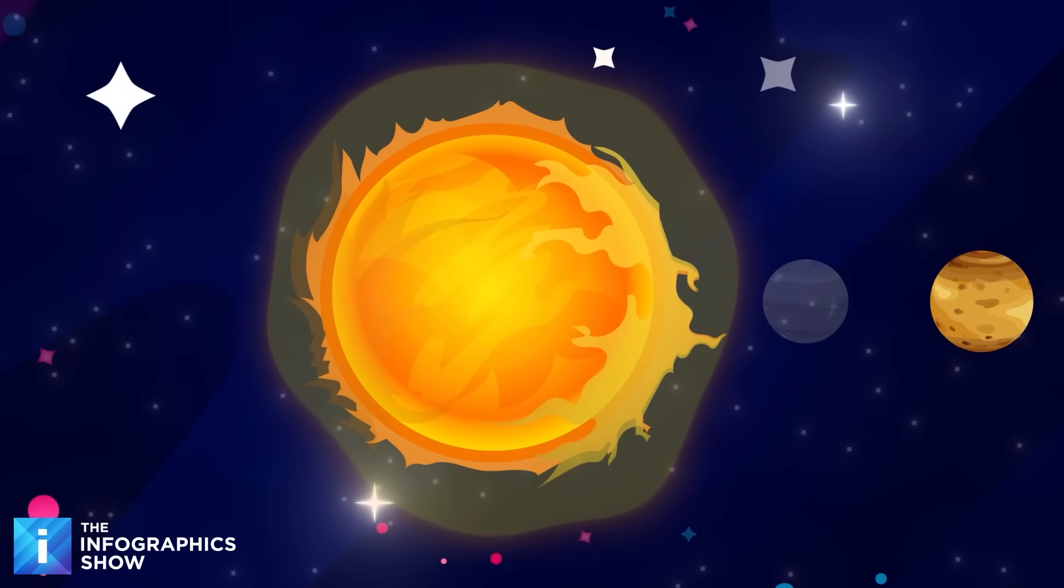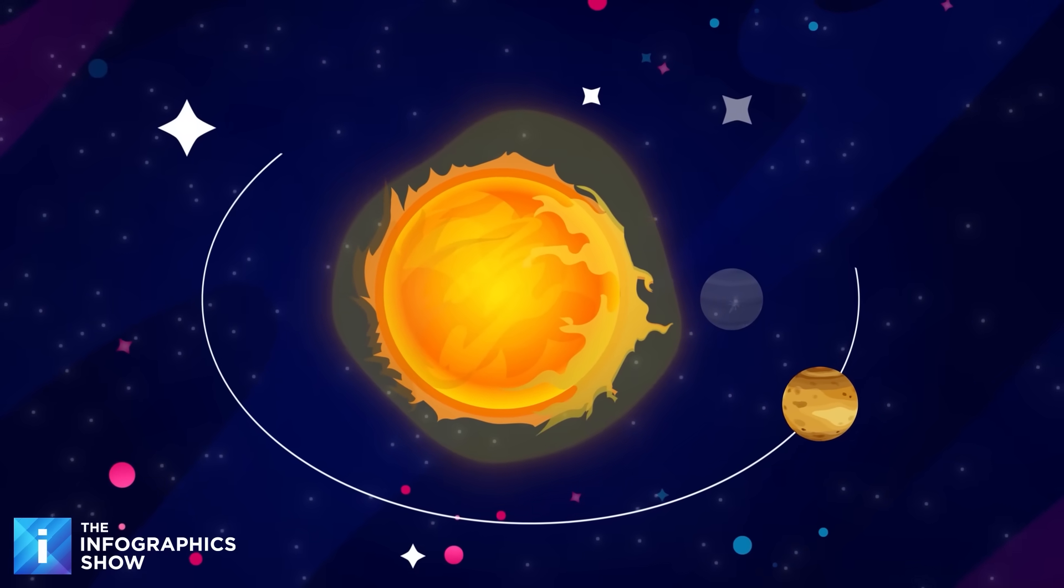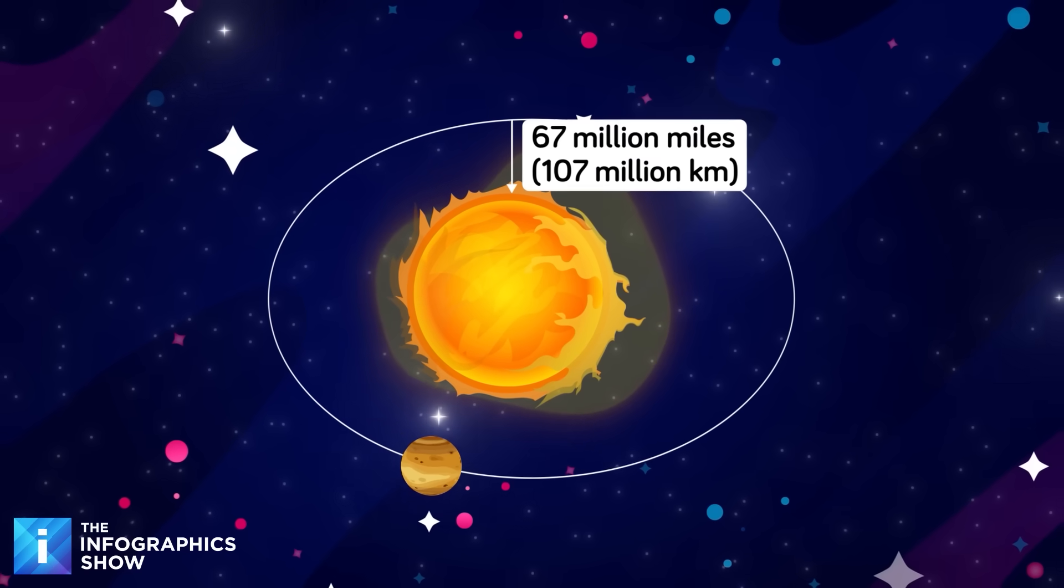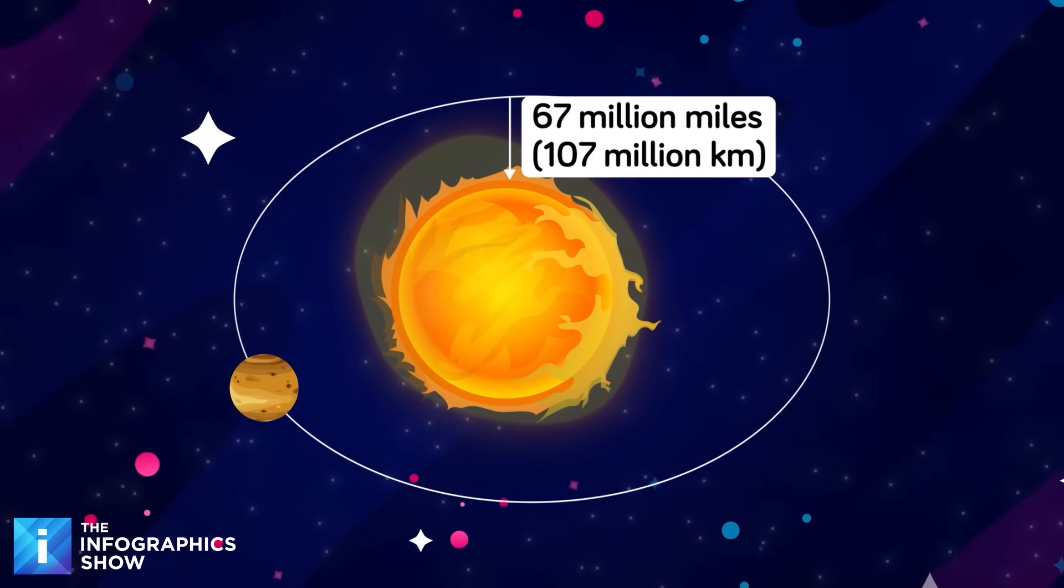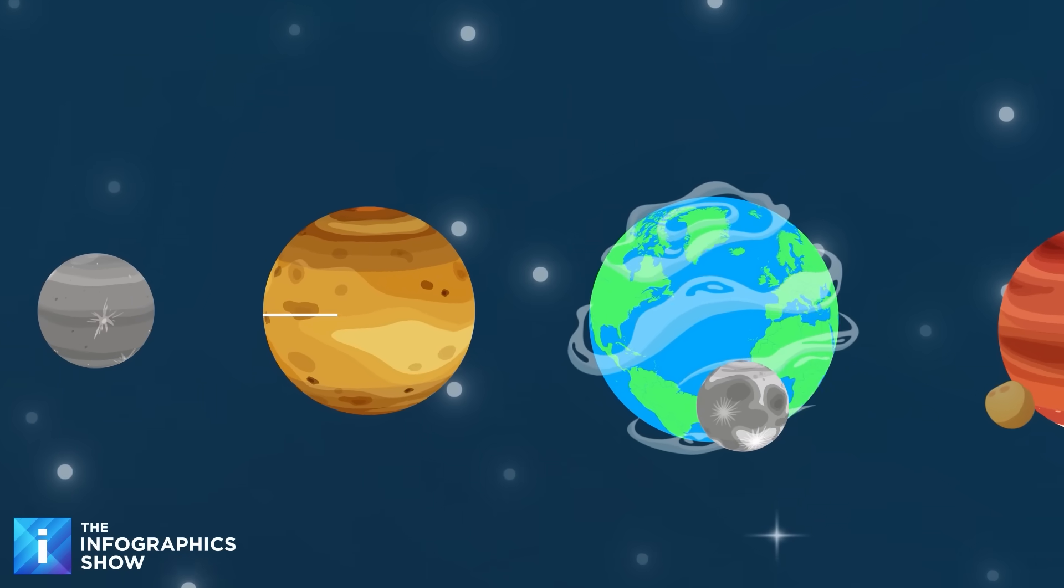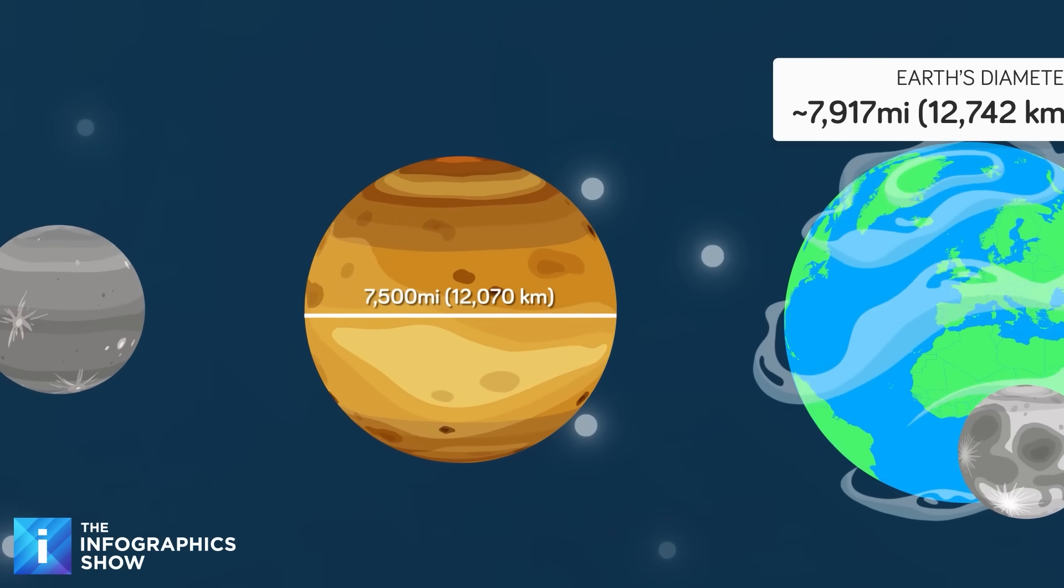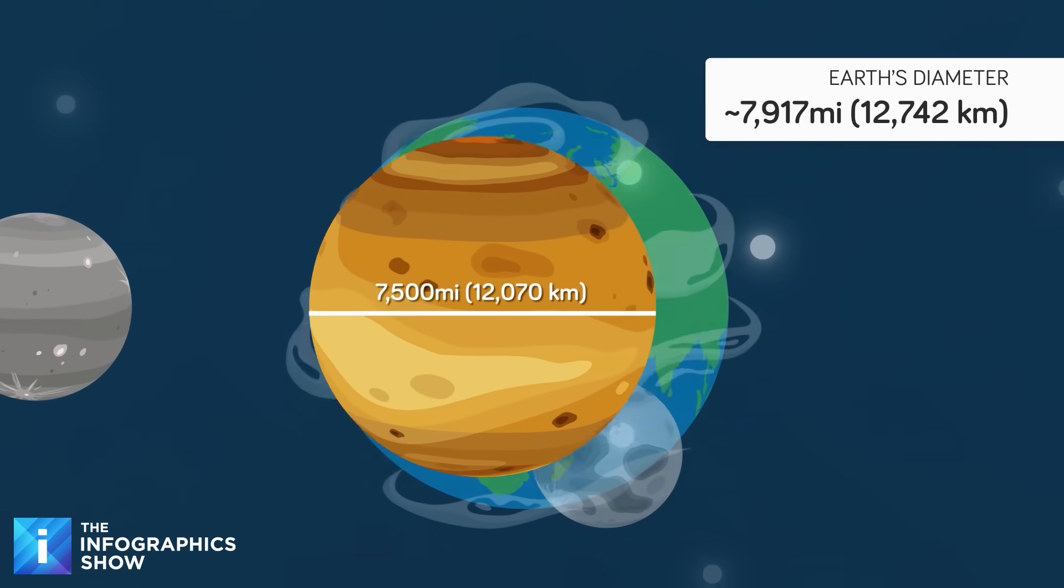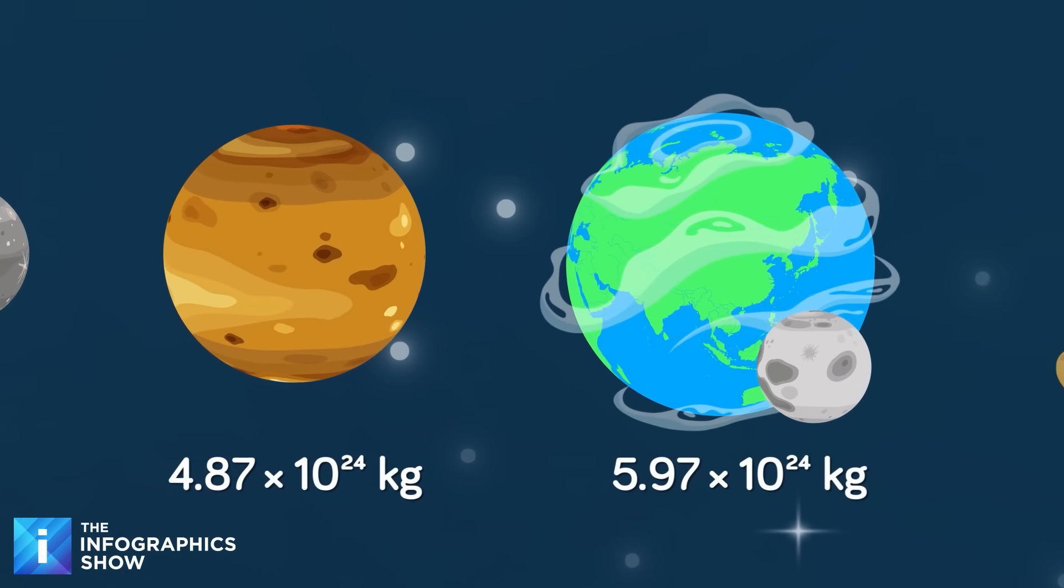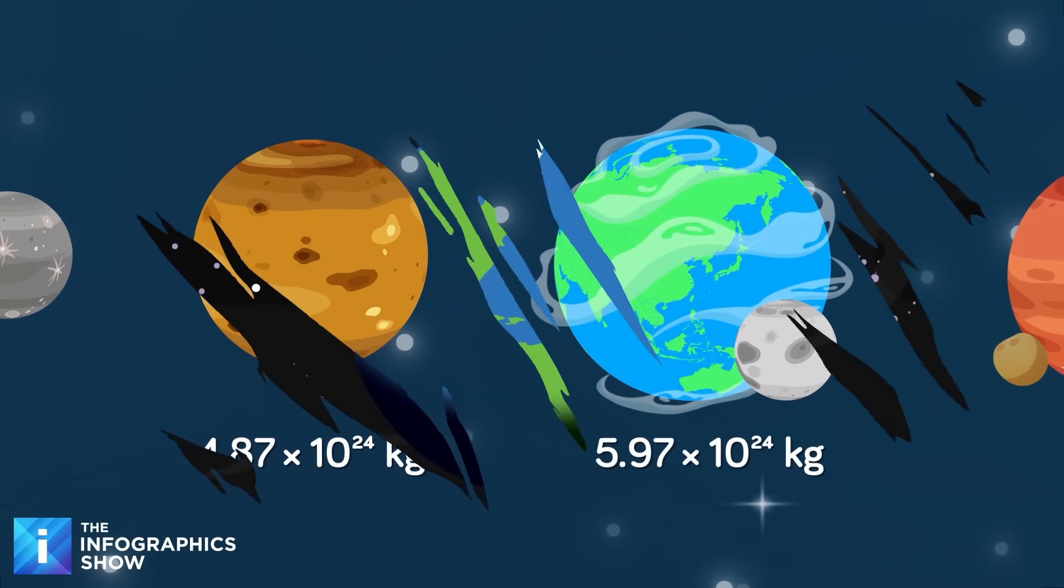Venus, the second planet from the sun, is the next stop, orbiting at an average distance of about 67 million miles. It's about 0.7 times Earth's distance from the sun. In many ways, it has characteristics quite similar to Earth. Venus has a diameter of around 7,500 miles, making it 95% the size of Earth. Its mass is roughly 81.5% that of Earth. But if the physical dimensions are roughly similar, conditions on the surface are most certainly not.